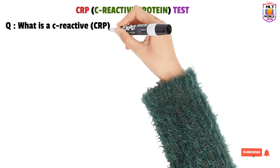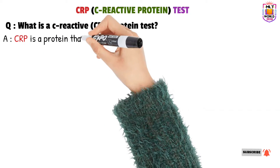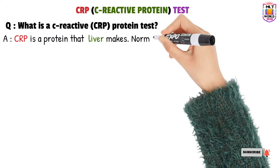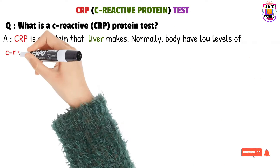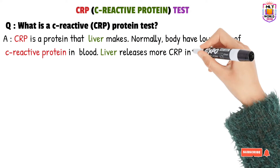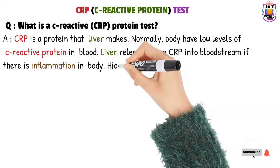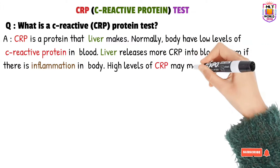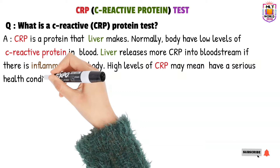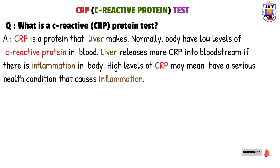A CRP or C-reactive protein test measures the level of C-reactive protein in the blood. CRP protein is made by the liver, and normally our body has very low levels of C-reactive protein in the blood. But the liver will release more CRP if there is any inflammation in the body. So a high level of CRP means there is inflammation or a serious health condition causing inflammation.